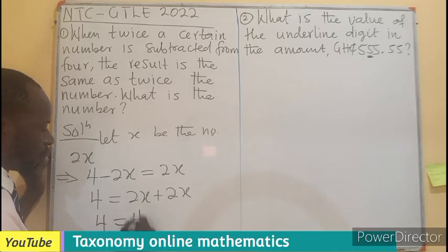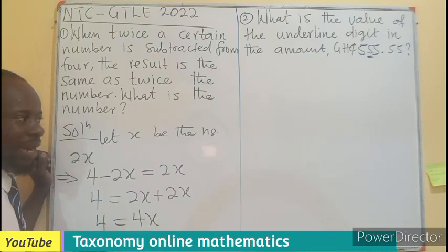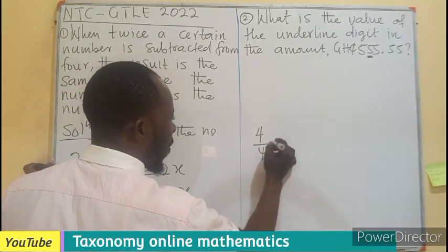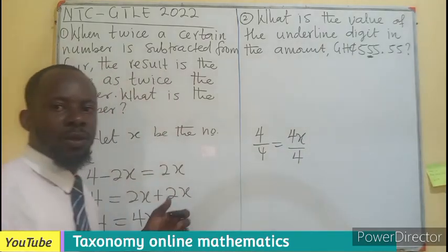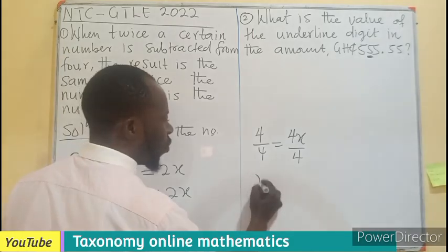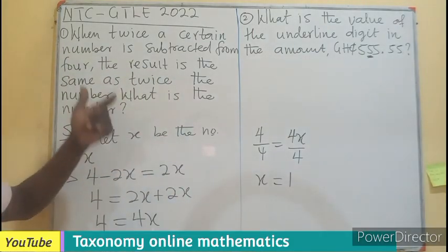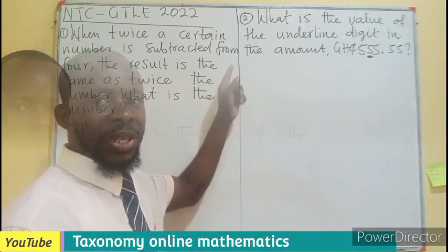But since we are looking for x, not 4x, we divide both sides by the coefficient. Meaning 4 divided by 4 equals 4x divided by 4. So in this case, your x will be equals to 1, meaning the value of x or the number, that certain number, is just 1.